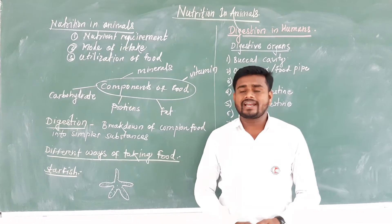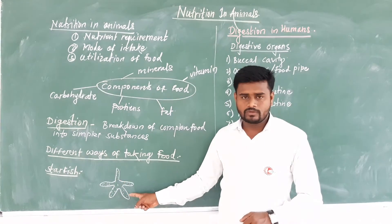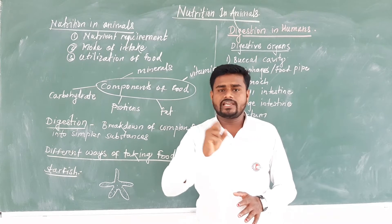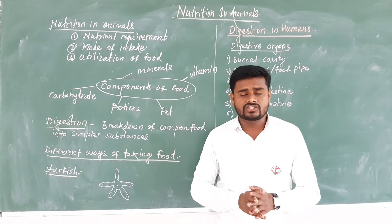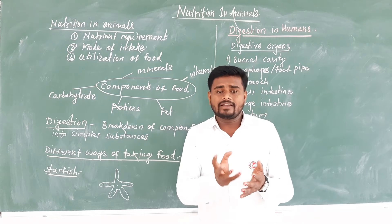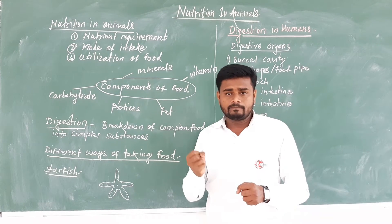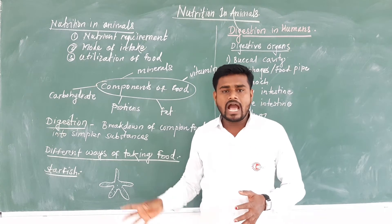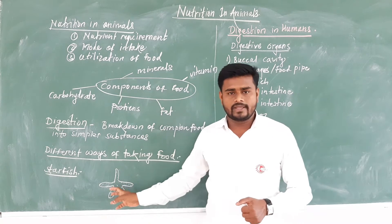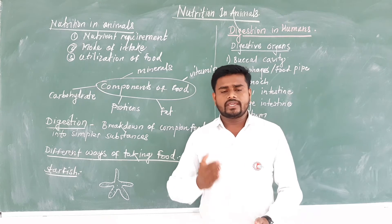Starfish — there is one amazing fact about the mode of taking food in the starfish. Starfish mostly feed on animals which live in hard-covered shells made of calcium carbonate. When the animal tries to come out by breaking the shell, the starfish pops out its stomach through its mouth, eats the prey, and then the stomach goes back in and the food gets digested slowly in the body. In this way, the starfish takes in food.